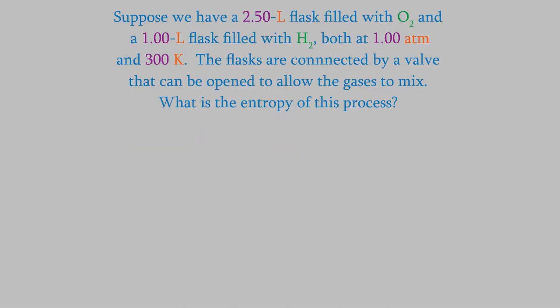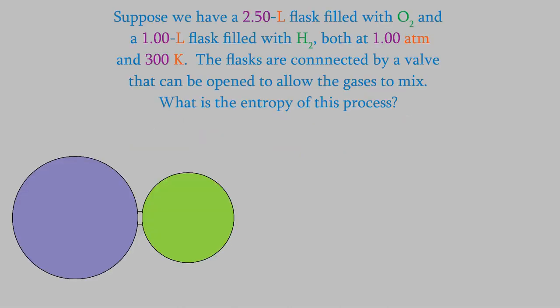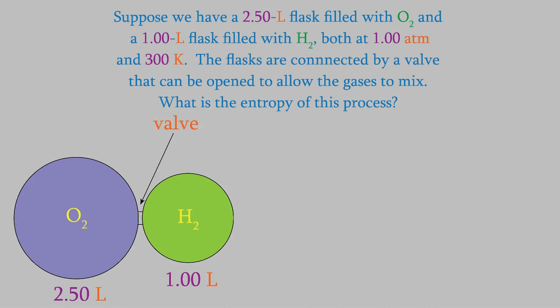For example, suppose we have two flasks. One contains 2.50 liters of oxygen gas, and the other is a smaller flask that contains 1.00 liters of hydrogen gas. Both flasks are at 300 Kelvin and 1.00 atmospheres. Now imagine that the two flasks are connected, and a valve between them can be opened so that the gases can mix. What would be the entropy of the mixing process?